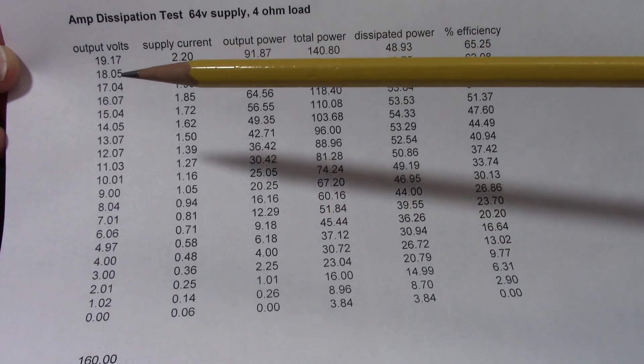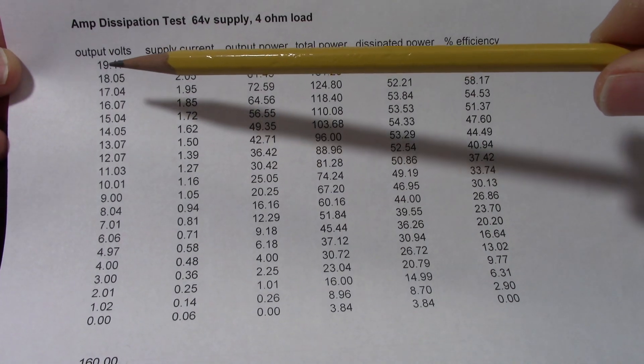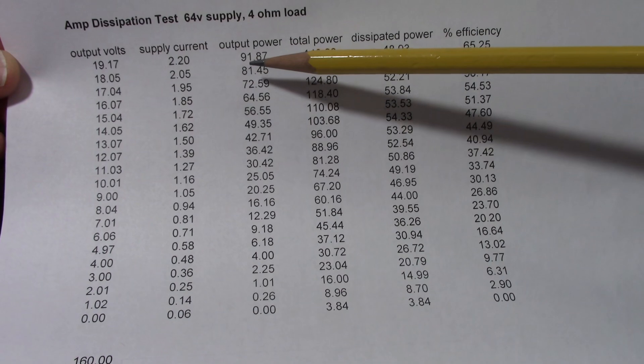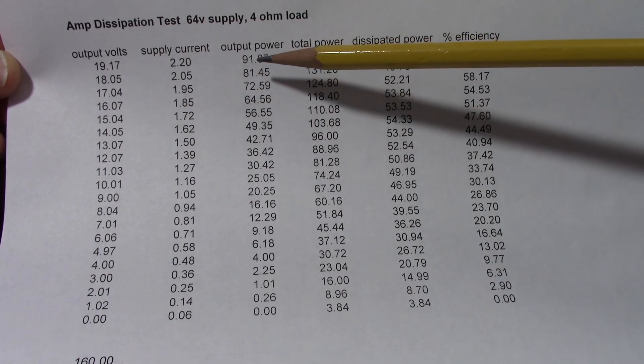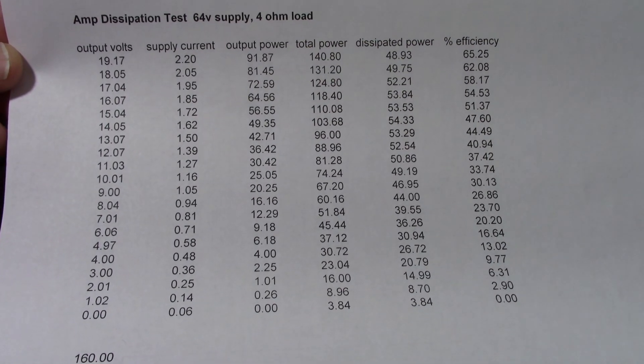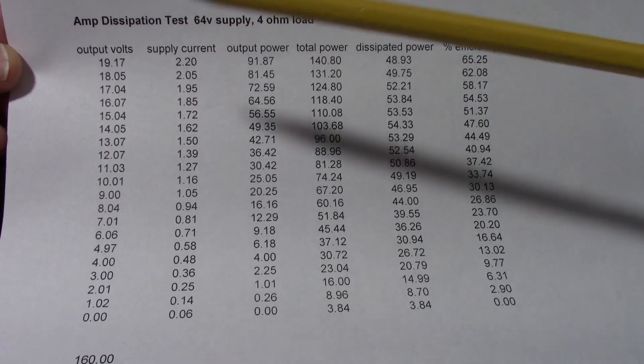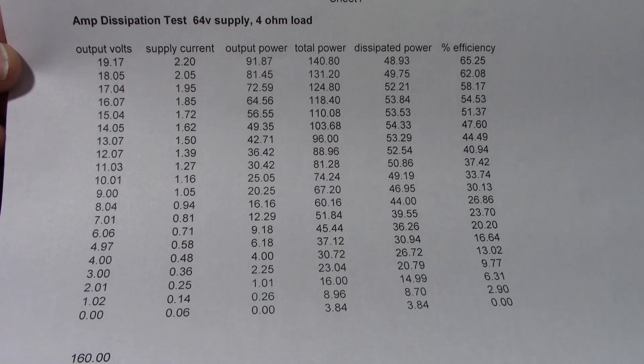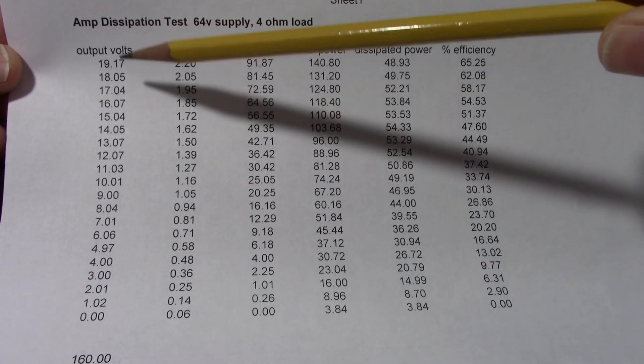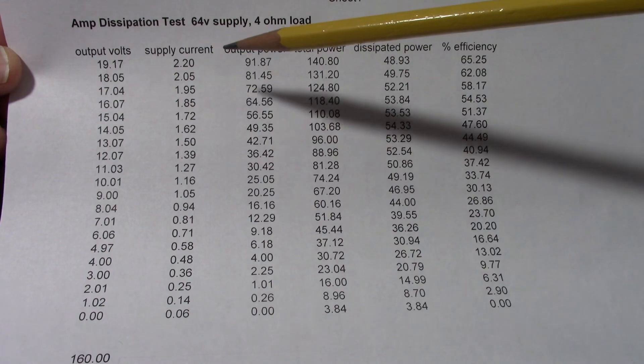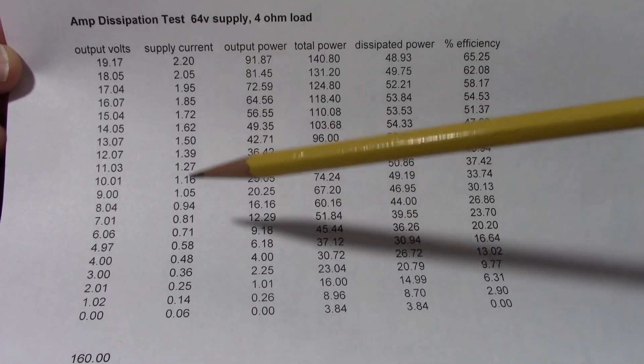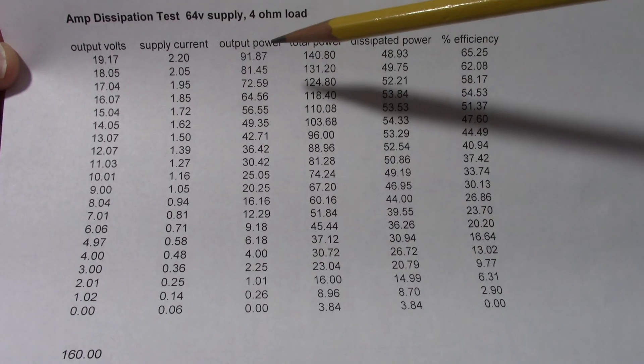But anyhow I had to re-measure the maximum output voltage before clipping and that gave me about 92 watts instead of 97 which I measured earlier. So when I got all that done I got some pretty good data - this is the output voltage that's an RMS value, this is the supply current from the actual power supply.